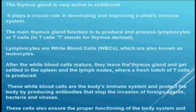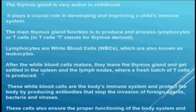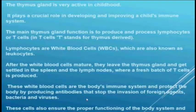After the white blood cells mature, they leave the thymus gland and get settled in the spleen — spleen is the graveyard of red blood cells — and lymph nodes, where a fresh batch of T cells is produced. These white blood cells are the body's immune system, and they protect the body by producing antibodies that stop the invasion of foreign agents such as bacteria and viruses. These cells ensure the proper functioning of the body system and look after the wear and tear of the organs.